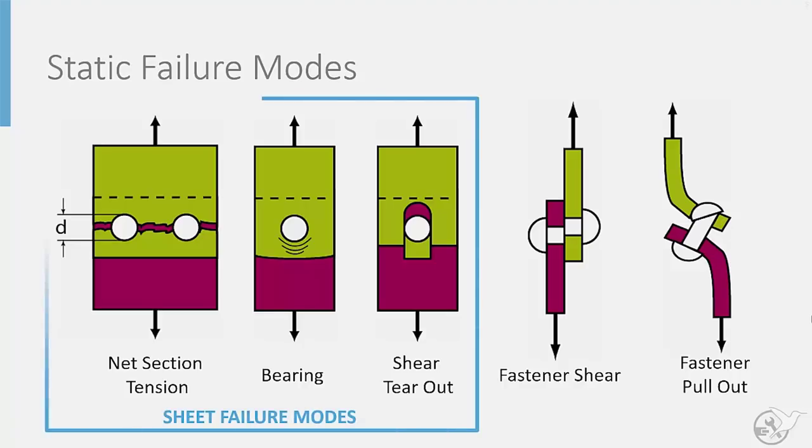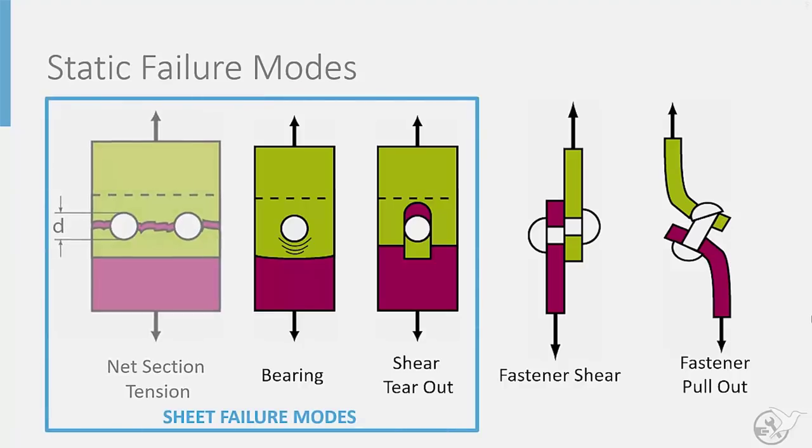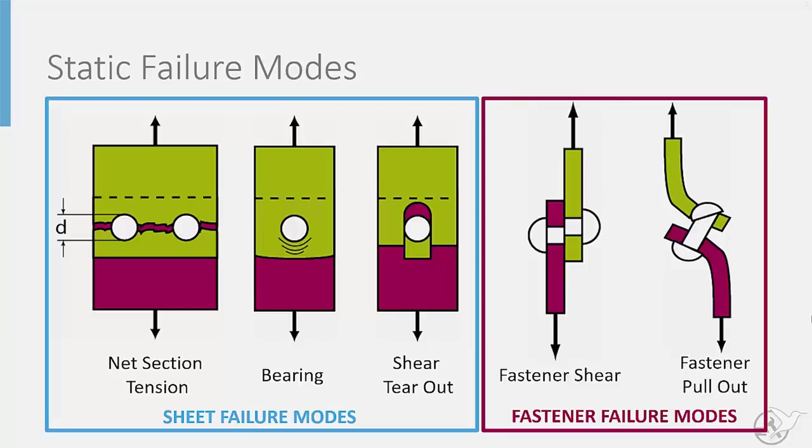There are five main failure modes to consider when looking at the static failure of shear type joints: three failure modes related to sheet material known as net section tension, bearing, and shear tear-out failure, and two failure modes related to the fastener known as fastener shear and fastener pull-out failure.